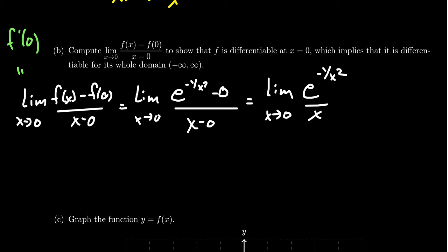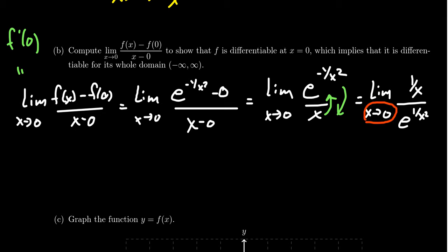We want to compute this limit. Notice you have a negative exponent on top — you can bring e to the bottom — and I'm also going to bring the x to the top. If we move things around, you get the limit as x approaches zero of one over x divided by e to the positive one over x squared. As x goes to zero from the right, one over x gets closer to infinity, and e to one over x squared also goes to infinity. This is an indeterminate form infinity over infinity, and therefore we're going to use L'Hôpital's rule.